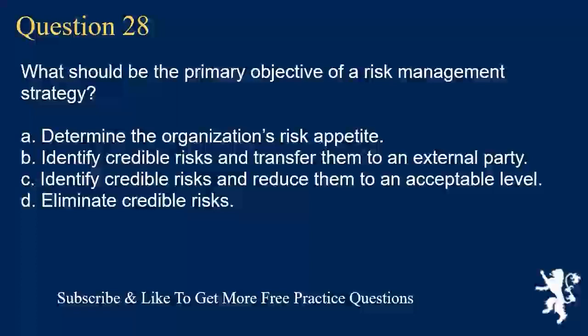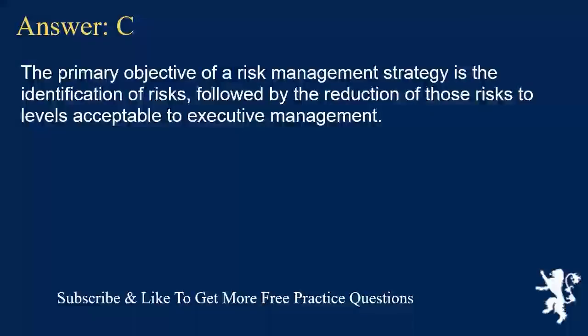Question 28. What should be the primary objective of a risk management strategy? A. Determine the organization's risk appetite. B. Identify credible risks and transfer them to an external party. C. Identify credible risks and reduce them to an acceptable level. D. Eliminate credible risks. Answer C. The primary objective of a risk management strategy is the identification of risks, followed by the reduction of those risks to levels acceptable to executive management.